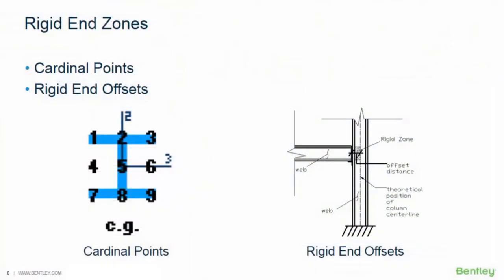In the next series of exercises, we're going to show you how to model rigid end zones through the use of the cardinal points property and also the rigid end offsets. Cardinal points are used to define the member hang points. They are typically used to model eccentric members or tapered members aligned in relation to a center. All members are defaulted to placement 0.5 in RAM Elements, which is the shear center of the member, but they can be modified. You can also assign rigid end offsets, which are used to define a rigid extension of the end of a member where shear or bending deformation is not desired. Rigid end offsets may be applied manually or through the use of the spreadsheet tools.